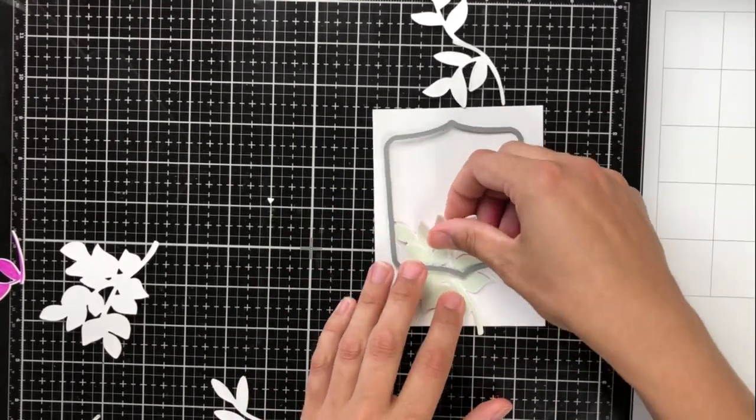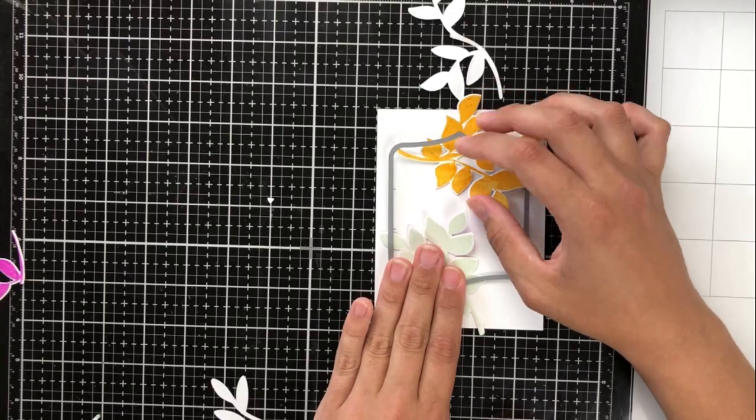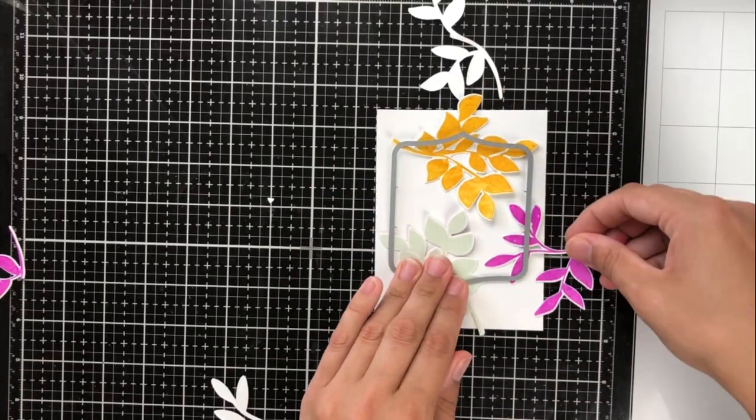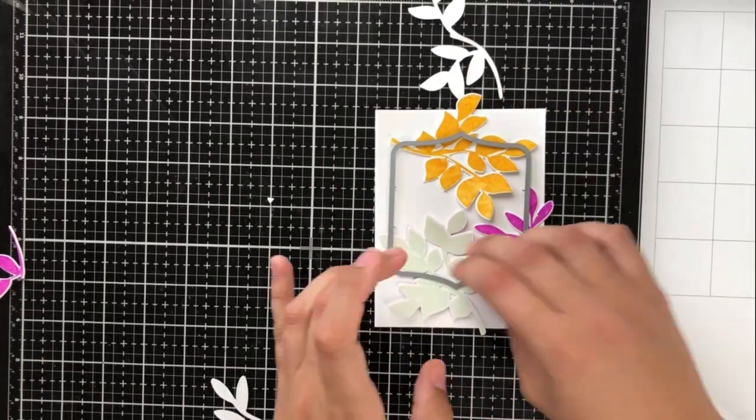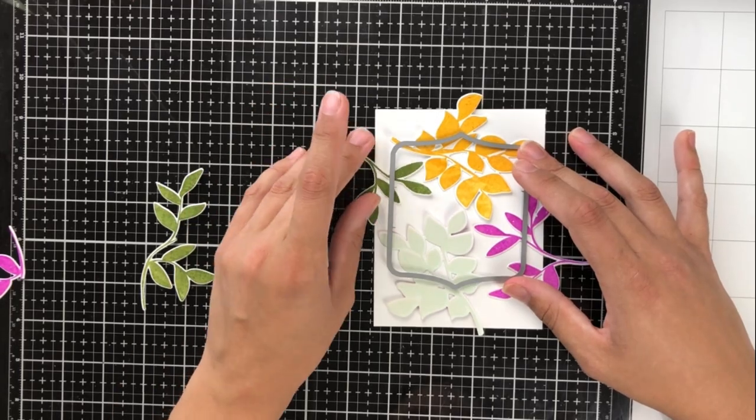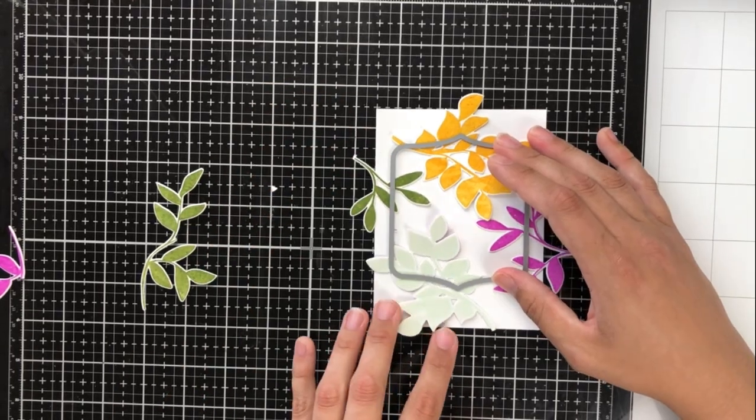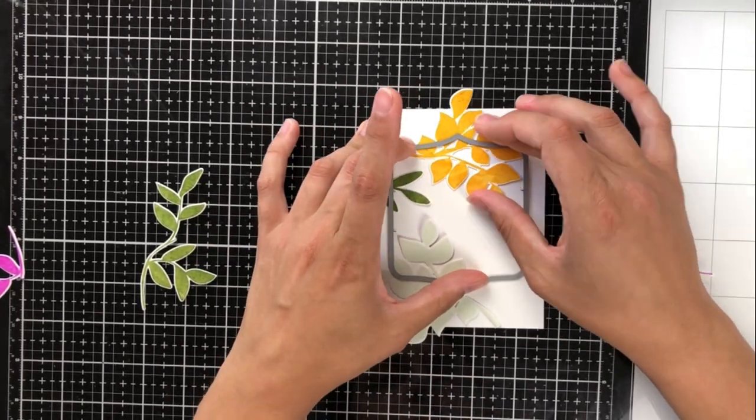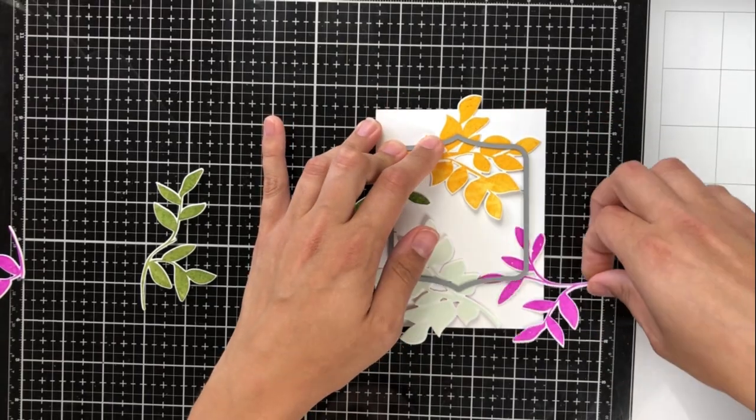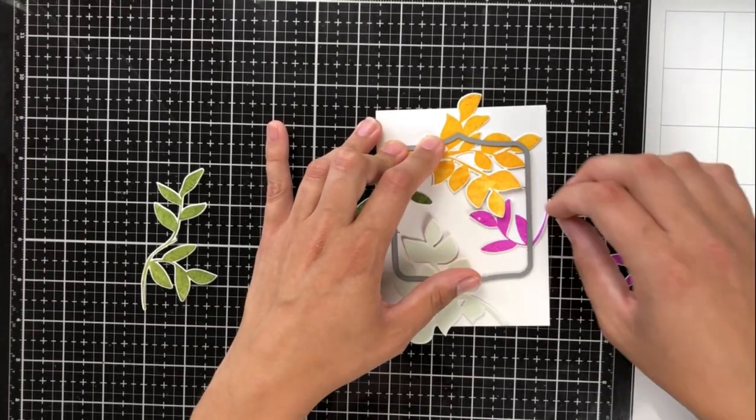So you can add the dotted line or the stitch line if you'd like, but you don't have to have it. And I love that option because sometimes the card is busy enough, or the design is busy enough that I don't need it. And sometimes I feel like I really need that stitched line. So it's great that you have the option of doing either or.